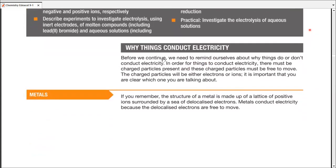Why do things conduct electricity? To conduct electricity, there must be charged particles present — positive or negatively charged particles in a substance. And those charged particles must be free to move. So there are two conditions: charged particles must be present, and they must be free to move. Charged particles can be electrons or positive/negative ions.